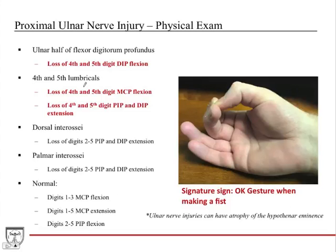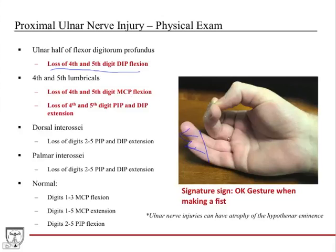The physical exam deficits from the ulnar half of flexor digitorum profundus include loss of fourth and fifth digit DIP flexion — those joints are extended out with no force to pull them in, and the extensor forces act unopposed. From loss of the fourth and fifth lumbricals, you've lost MCP flexion at those digits, so they're extended out. There is also loss of fourth and fifth digit PIP and DIP extension, so those fingers are essentially pointing straight out with weaker extension at those joints.